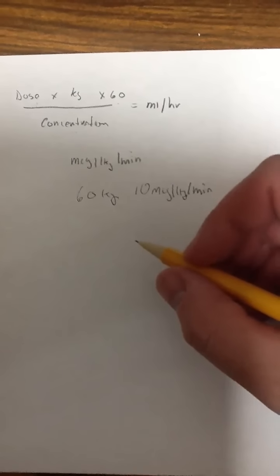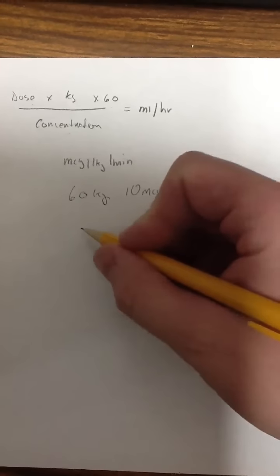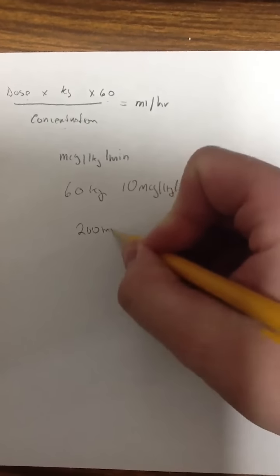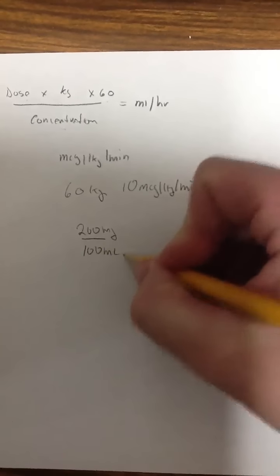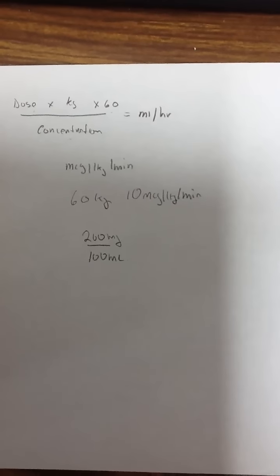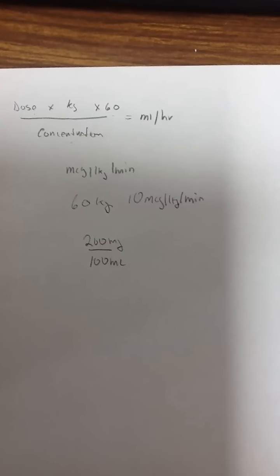And then let's just go ahead and mix. We have to mix our own dopamine. Let's say that we mix 200 milligrams in 100 milliliters. Alright, so I have all the basic information I need to figure out what's going on.